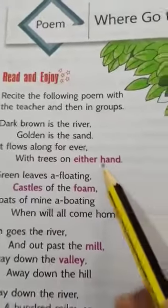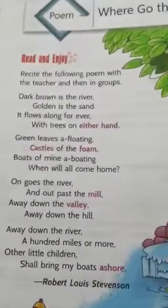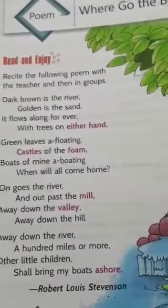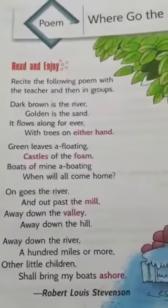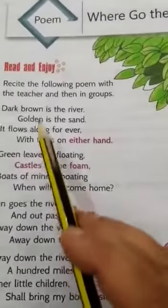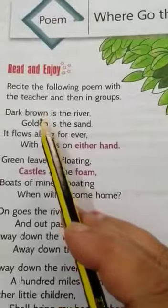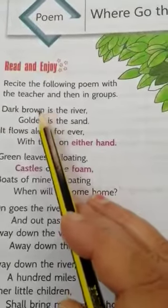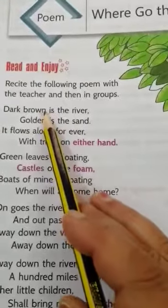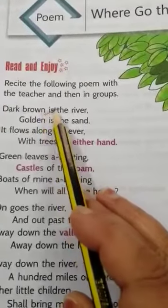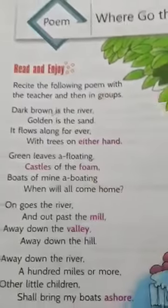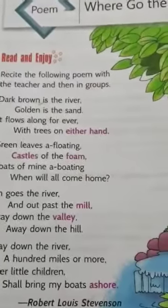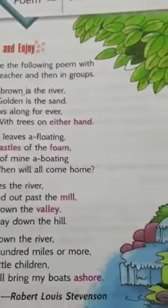In this stanza, the poet is describing that the color of the river is dark brown. That means the water is muddy.